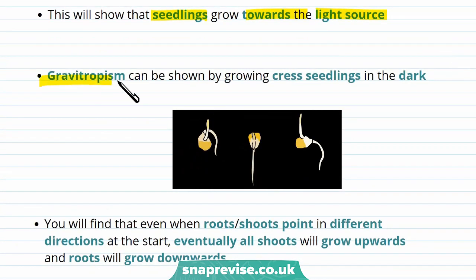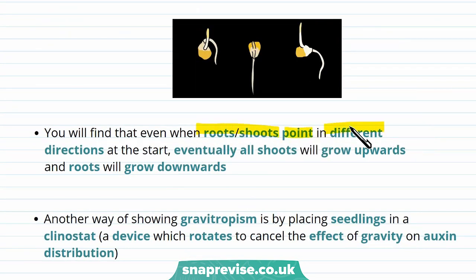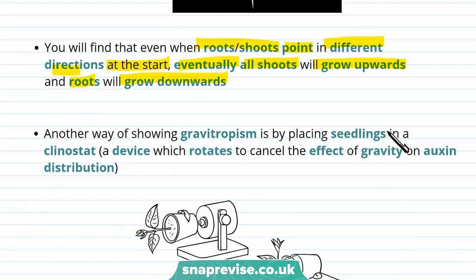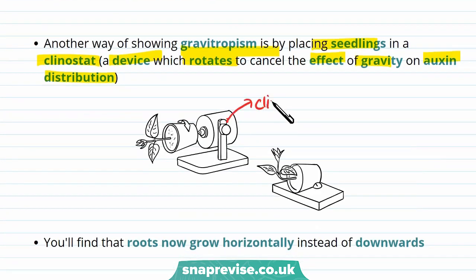We can also investigate gravitropism by growing cress seedlings in the dark. Even when roots or shoots point in different directions at the start, eventually all shoots will grow upwards and roots will grow downwards. Another way of showing gravitropism is by placing seedlings in a clinostat — a device which rotates to cancel the effects of gravity on auxin distribution. As auxin is then distributed evenly, roots grow horizontally instead of downwards, whereas normally shoots grow upwards and roots grow downwards.